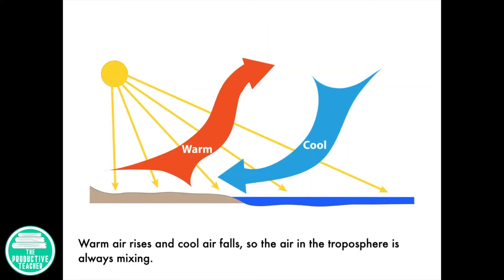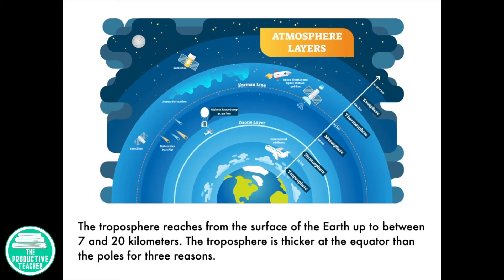Warm air rises and cool air falls, so the air in the troposphere is always mixing. The troposphere reaches from the surface of the Earth up to between 7 and 20 kilometers.